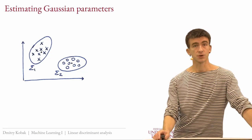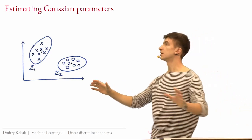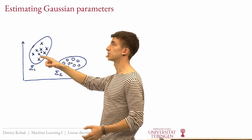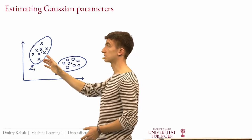The pooled covariance matrix estimator combines points from both classes: take all points from class one, compute squared deviations from the class one mean; do the same for class two; sum them together and normalize. For an unbiased estimate, you subtract the number of classes (not just one) in the denominator.